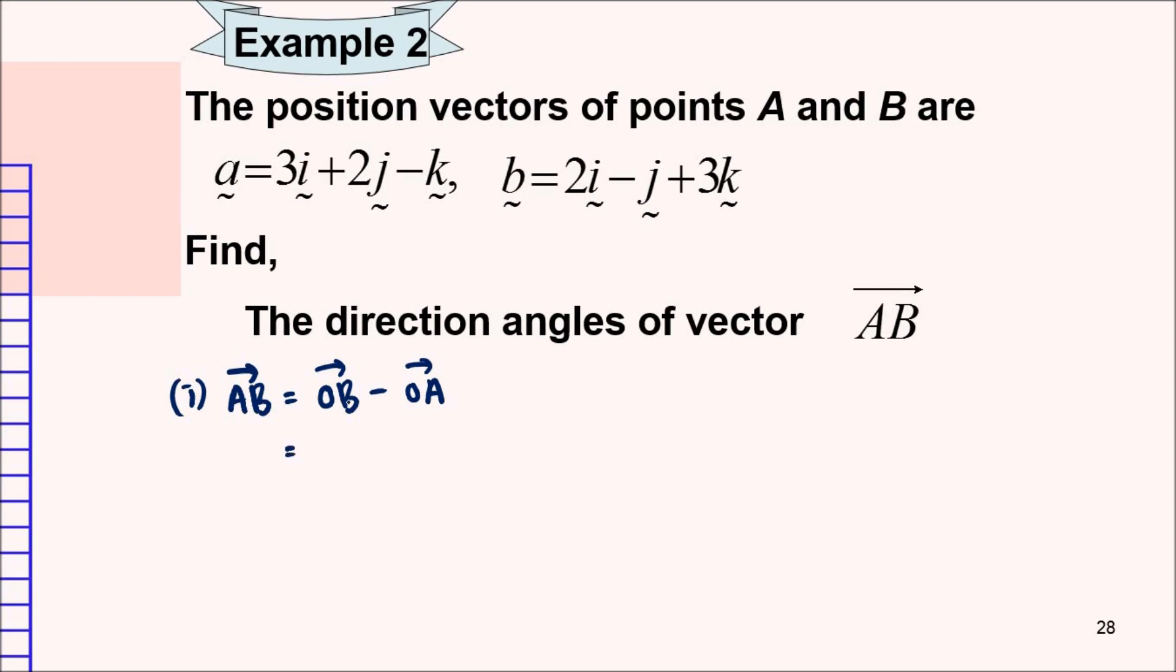Alright, so taking vector OB, so vector OB is given this B over here. So, we have 2i minus j plus 3k, this vector, minus with OA. So, A, vector A over here is given by 3i plus 2j minus k. Alright, and then we just subtract these 2 vectors. We're going to have negative i minus 3j and then plus with 4k. This is the vector for AB.